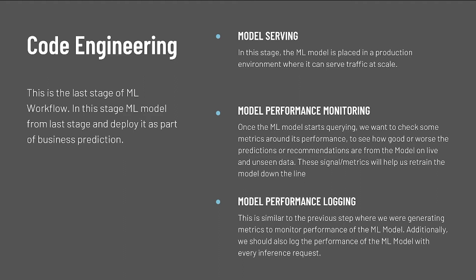A model deployment stage consists of three steps. First is model serving, where you are tasked to place an ML model in a production environment where it can serve traffic at scale. Second is model performance monitoring — once we have started querying our ML model, we want to generate metrics around its performance and see how good or poor the predictions or recommendations are on live and unseen data. These signals and metrics will help us to retrain the model down the line. Third is model performance logging, where we log the performance of the ML model with every inference request.